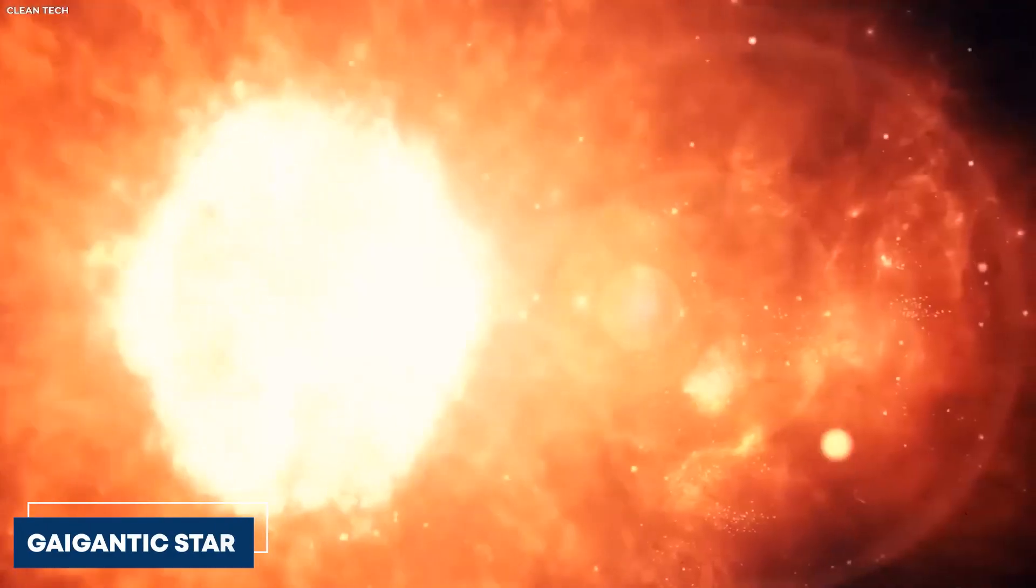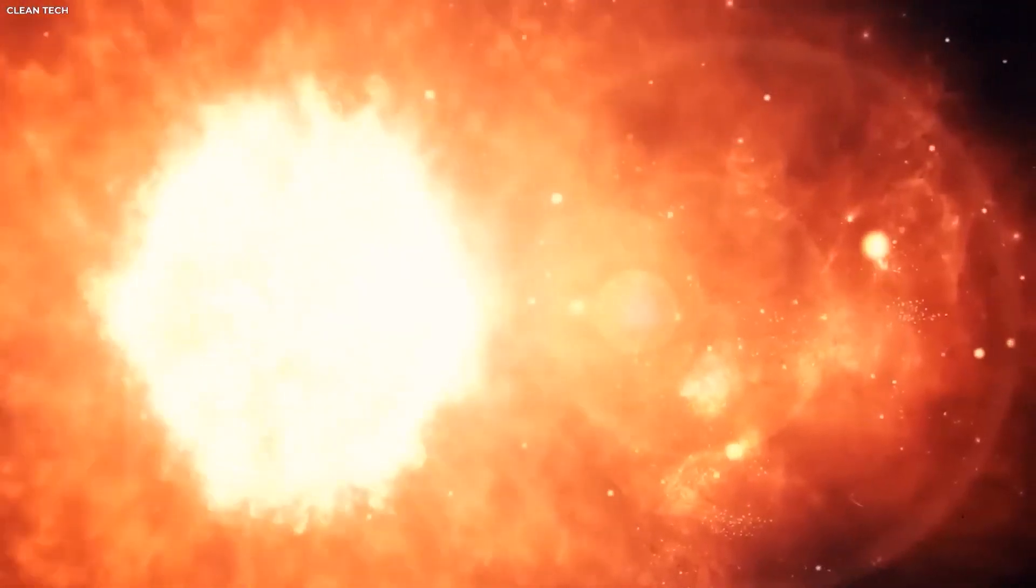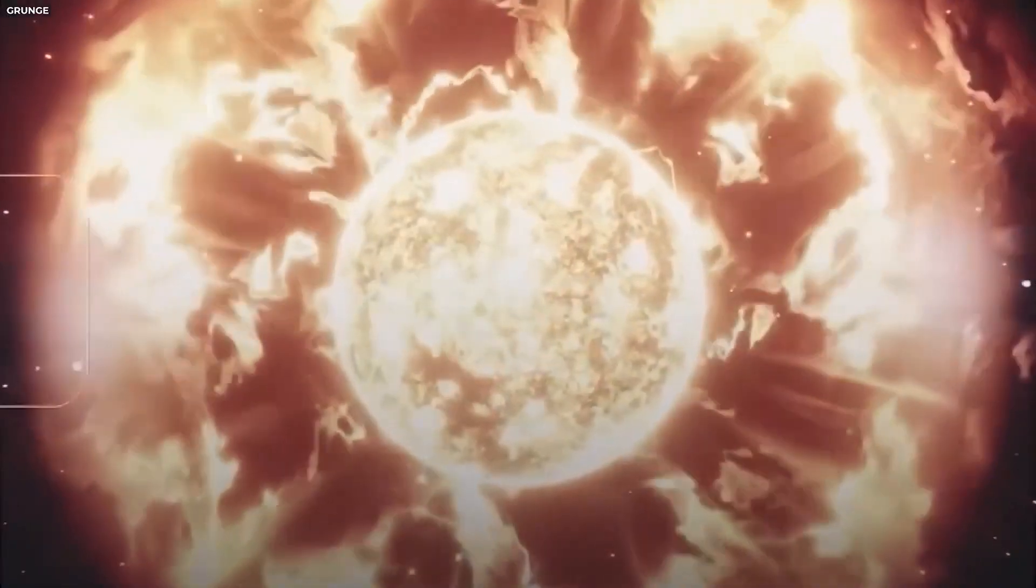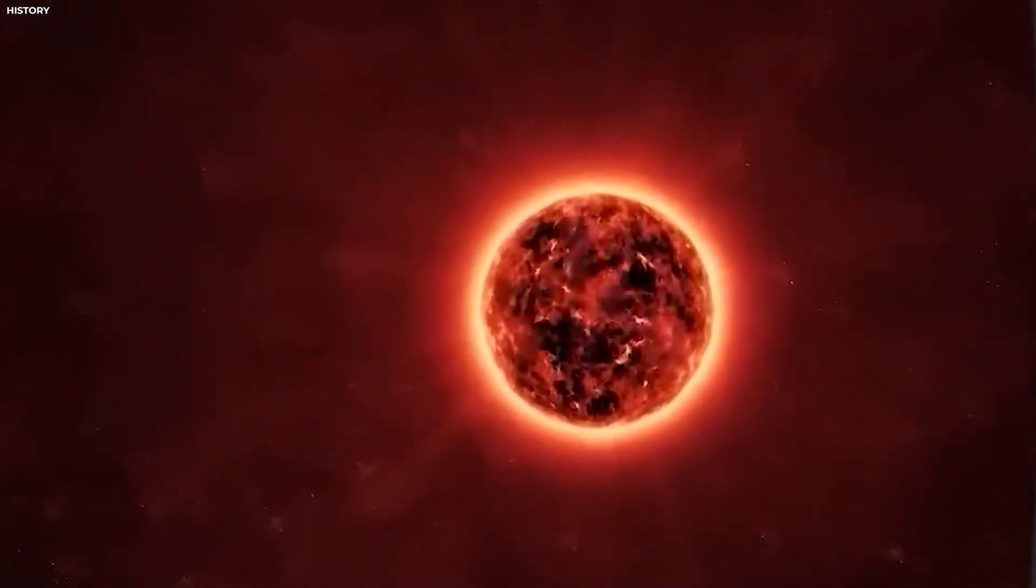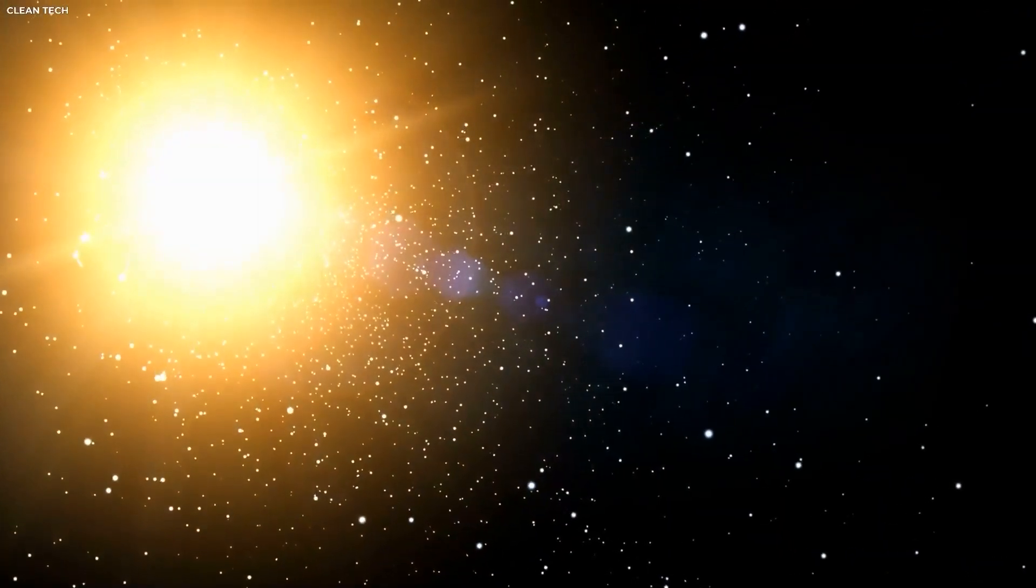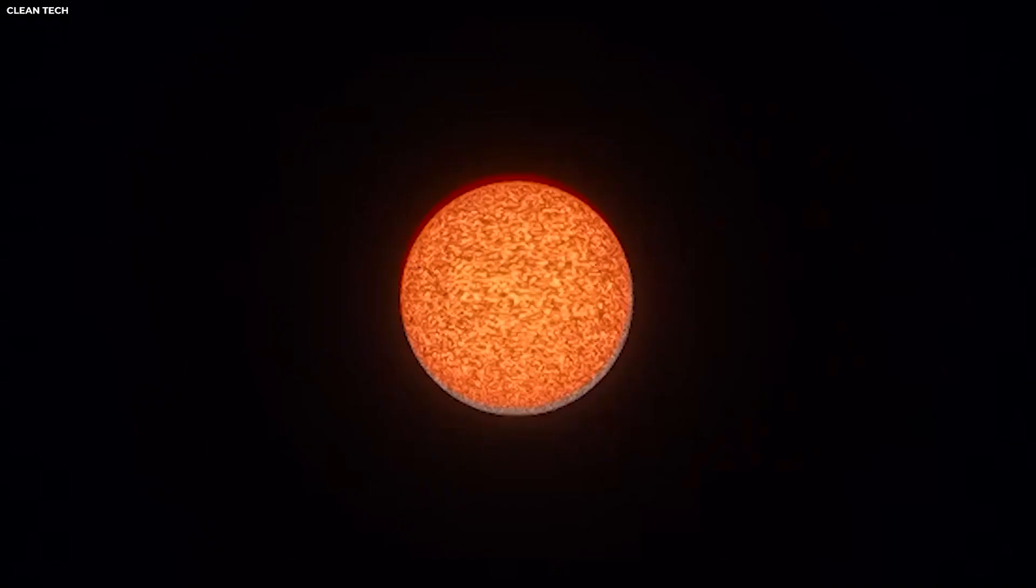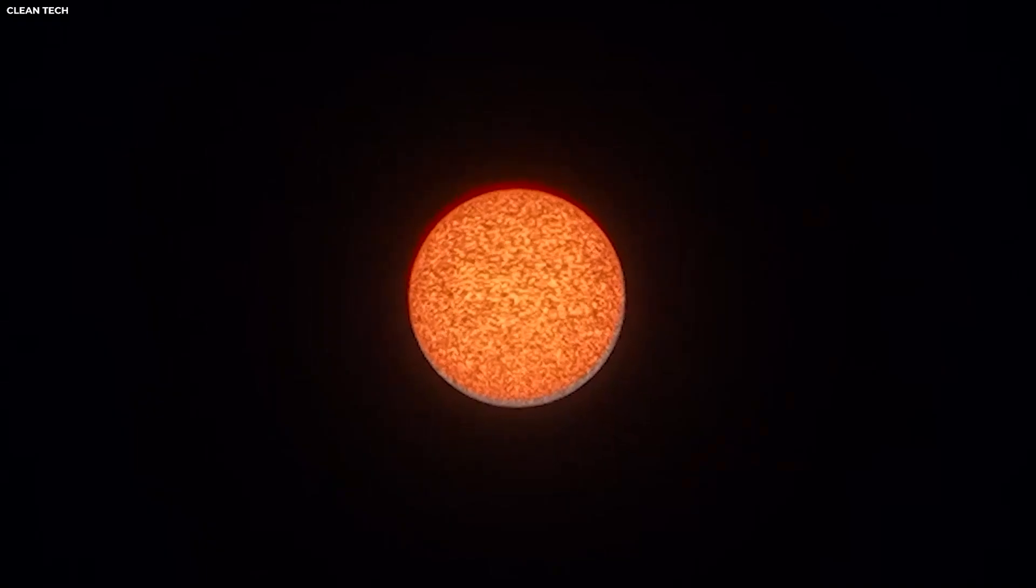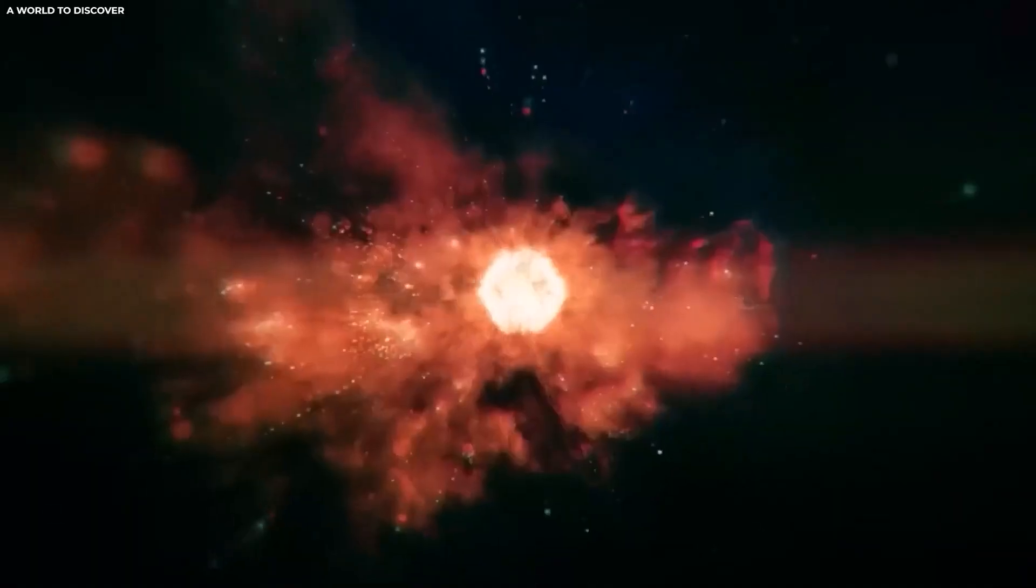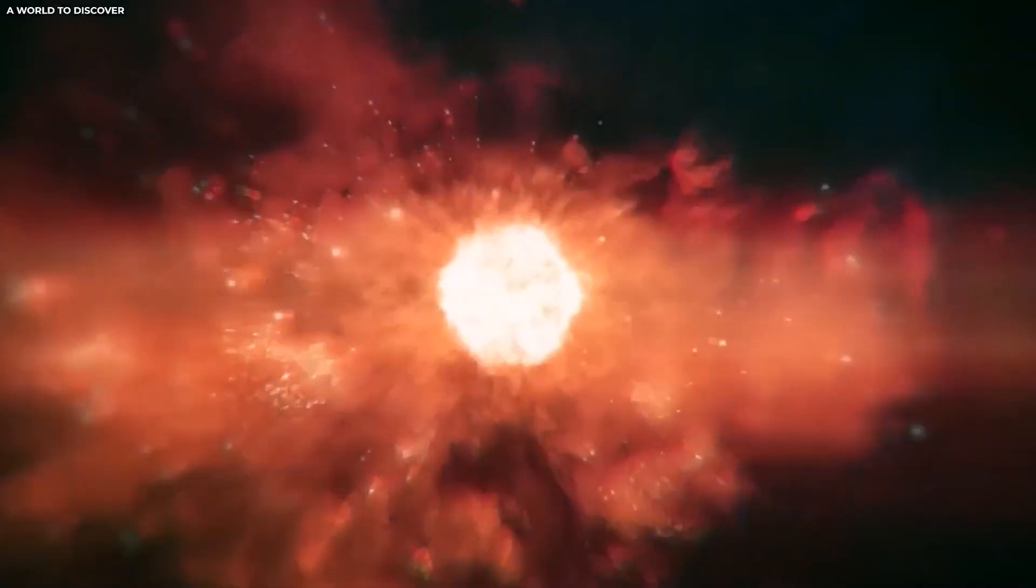Betelgeuse, being a bit of a gigantic star, doesn't just fuse hydrogen and helium like our sun. It's working on fusing heavier elements, which takes the drama up several notches. As Betelgeuse burns through its fuel, its core contracts, and its outer layers could be throwing a fit in response. This might explain why the star is suddenly shining so bright. It could be a sign that some serious internal convulsions are happening.